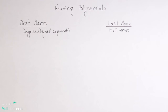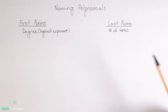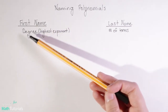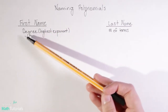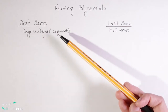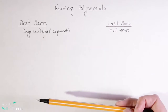Just like people have first and last names, polynomials also have first and last names. We're going to look at how to identify what name a polynomial should have. Starting with a first name, our first name is based on the degree — meaning what is the highest exponent within the polynomial?